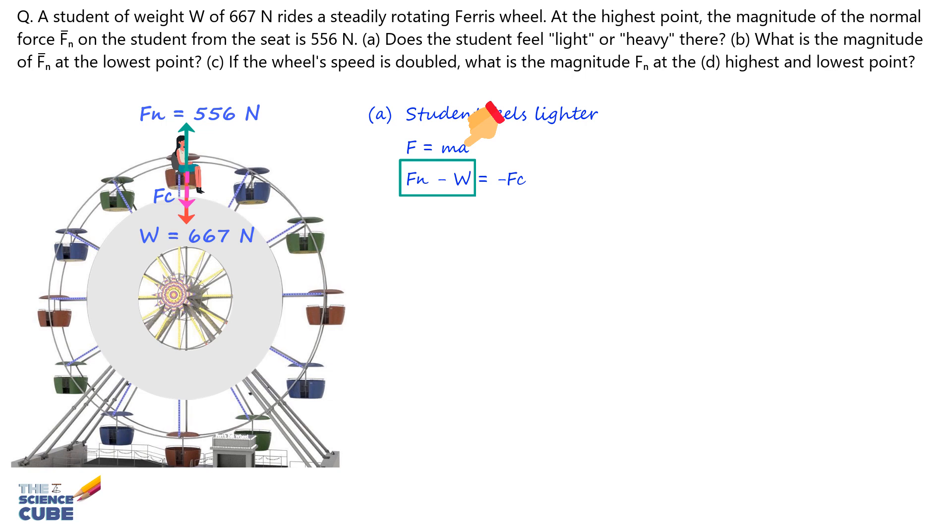Also, we have attached the appropriate signs: positive for Fn which is acting upwards, minus for W acting downwards, and minus again for centripetal force Fc acting downwards towards the center. So we can say that Fn equals W minus Fc.